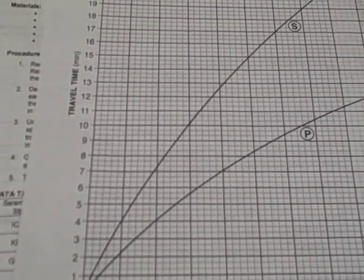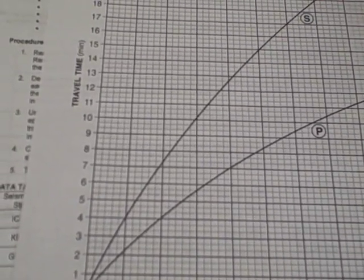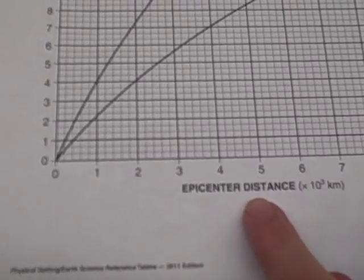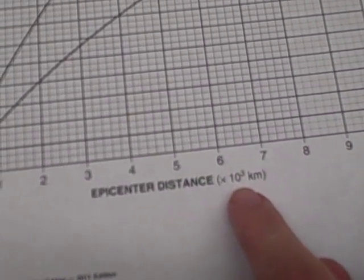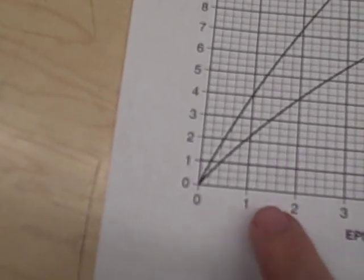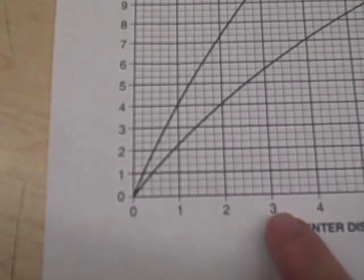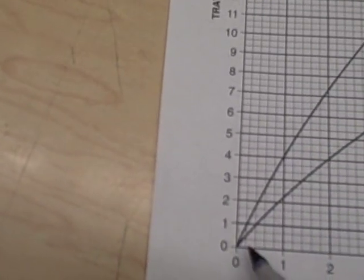The first thing you need is a piece of scrap paper. You can use any scrap paper you have available — I'm going to use the back of my lab. What you do is take your scrap paper and line it up along the time axis of this graph. There are two axes. The bottom one is the epicenter distance, measured in thousands of kilometers. So this means 1,000 kilometers, 2,000 kilometers, 3,000 kilometers, and so on. The lines in between are units of 200 kilometers.